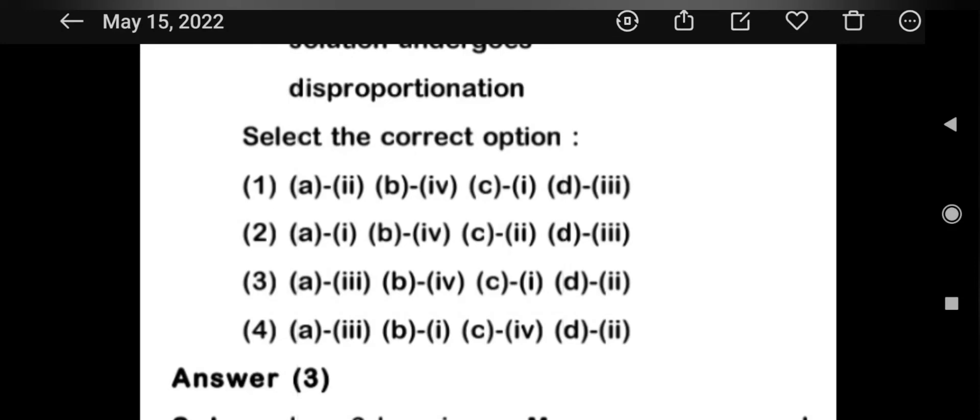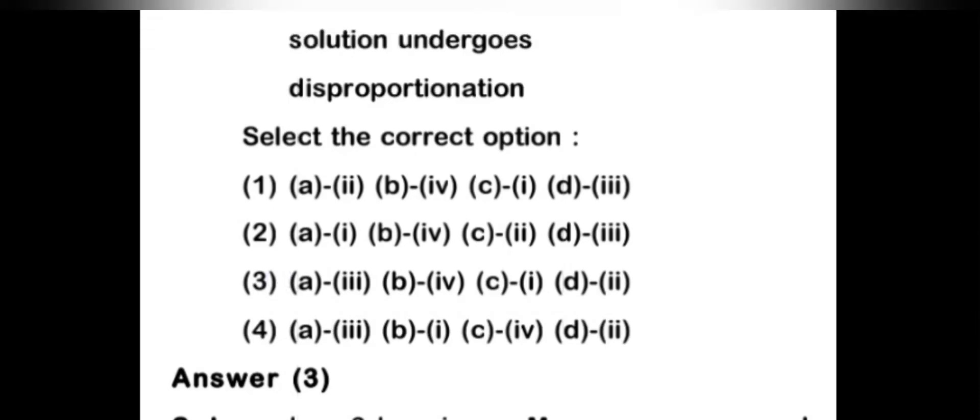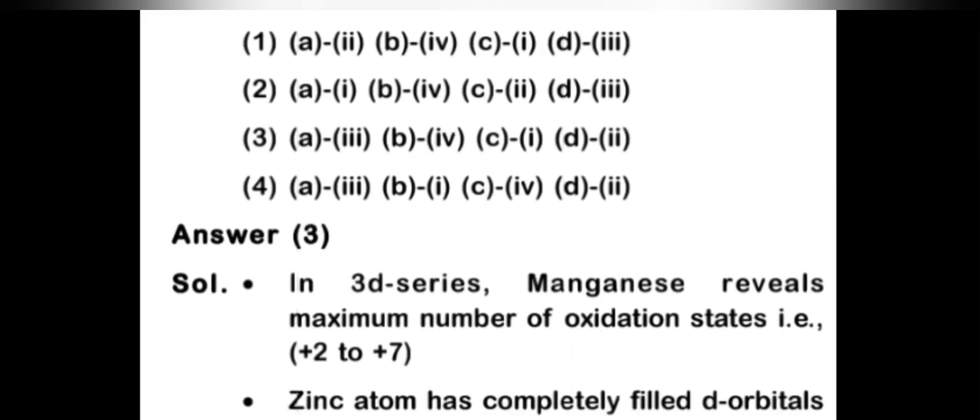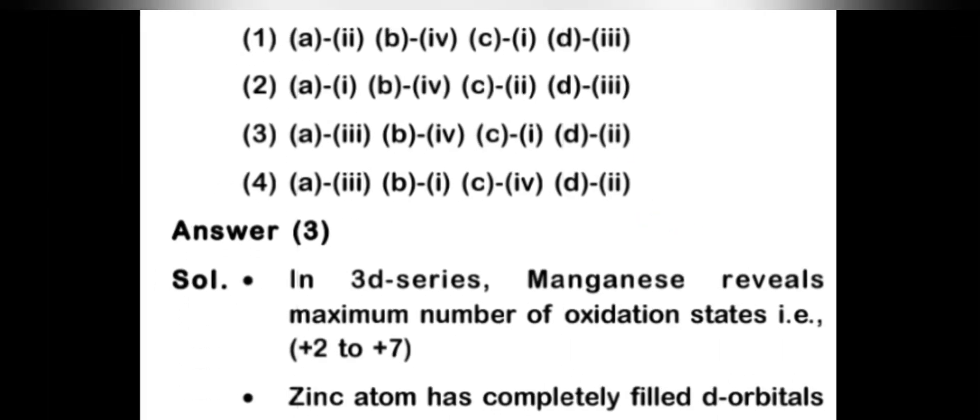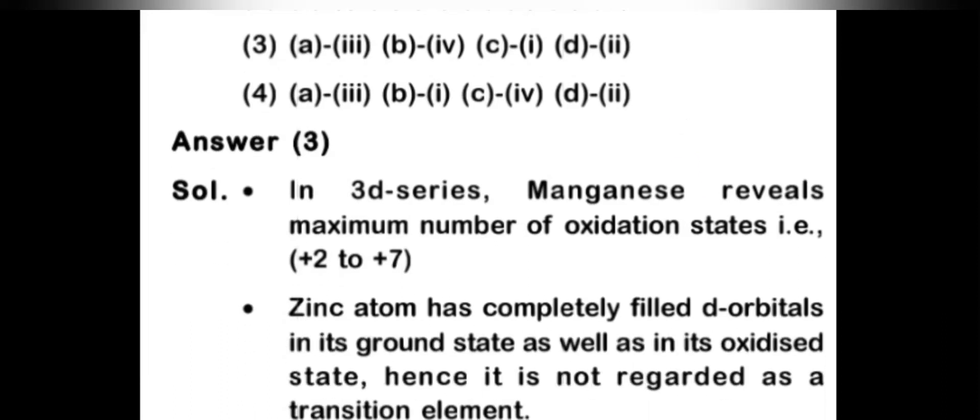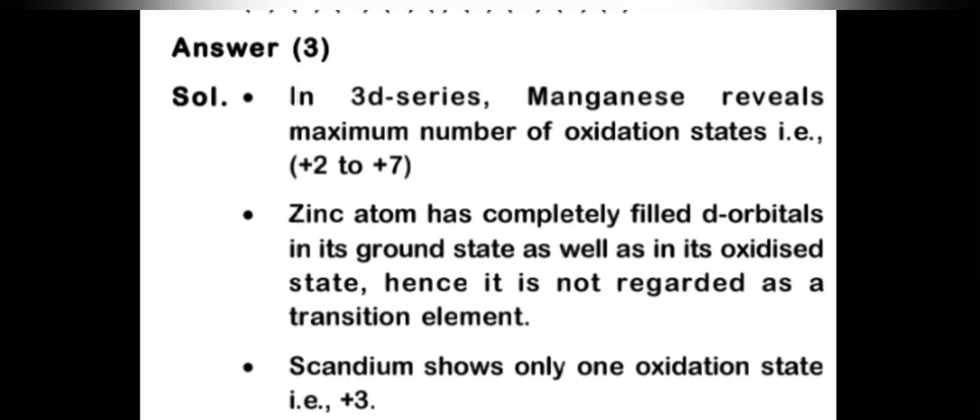In 3d series, manganese reveals maximum number of oxidation states, plus two to plus seven, because it contains two electrons in s orbital and five electrons in d orbital. Zinc atom has completely filled d-orbital in its ground state as well as its oxidizing state.